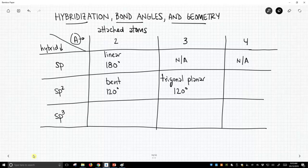If we have four attached atoms we will not be sp2 hybridized because sp2 only gives us three hybrids. We need at least four if we have four attached atoms. So this is not applicable.